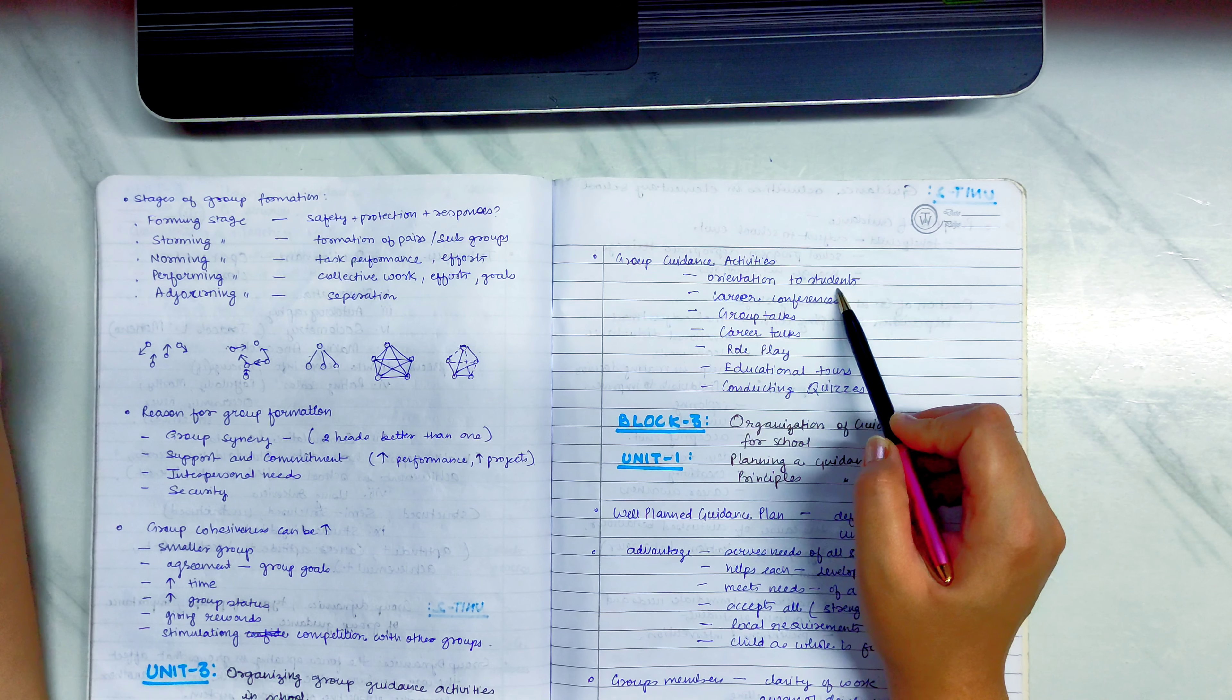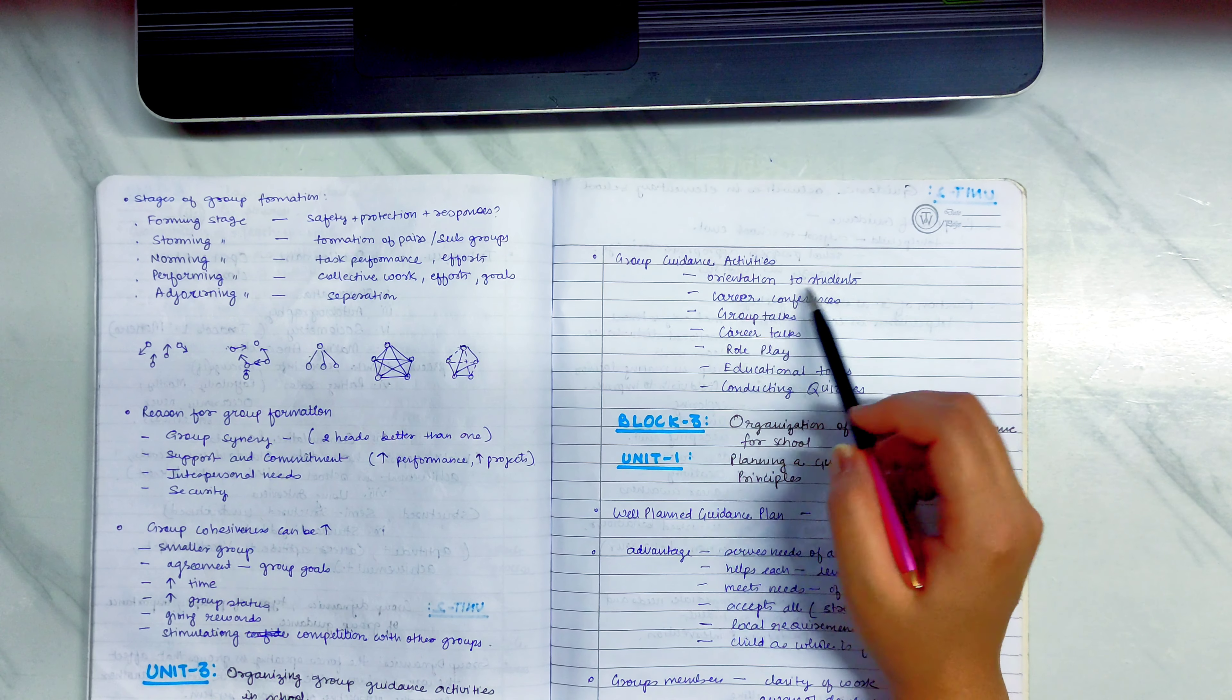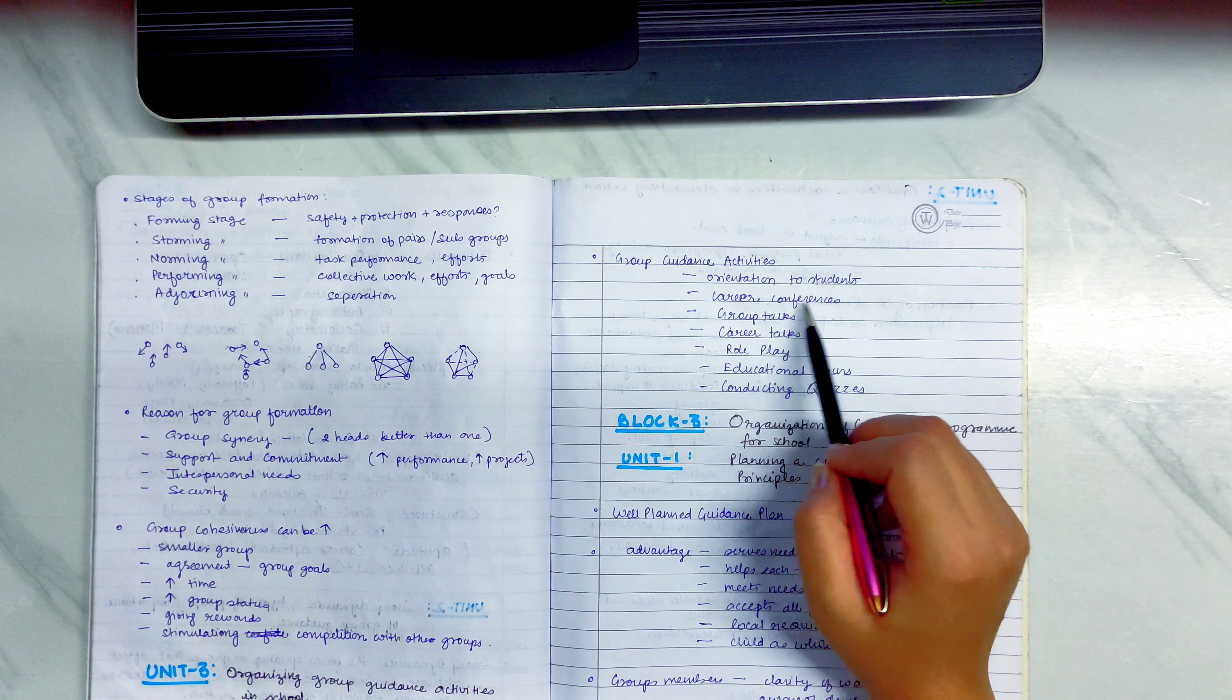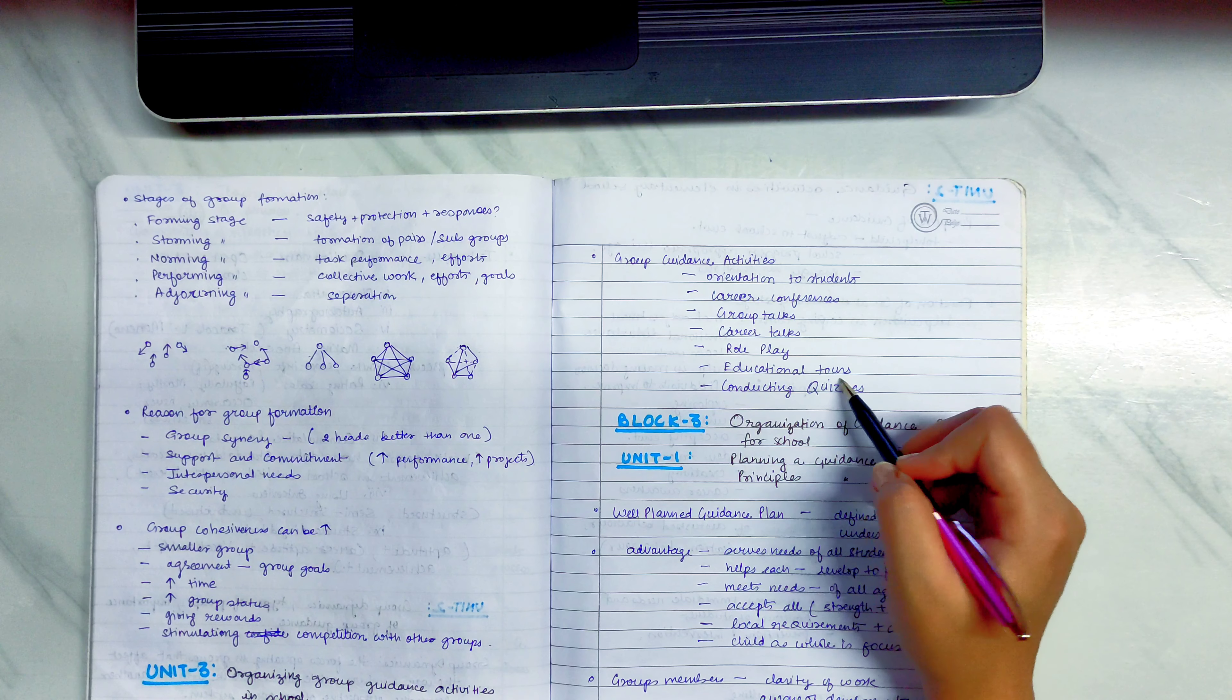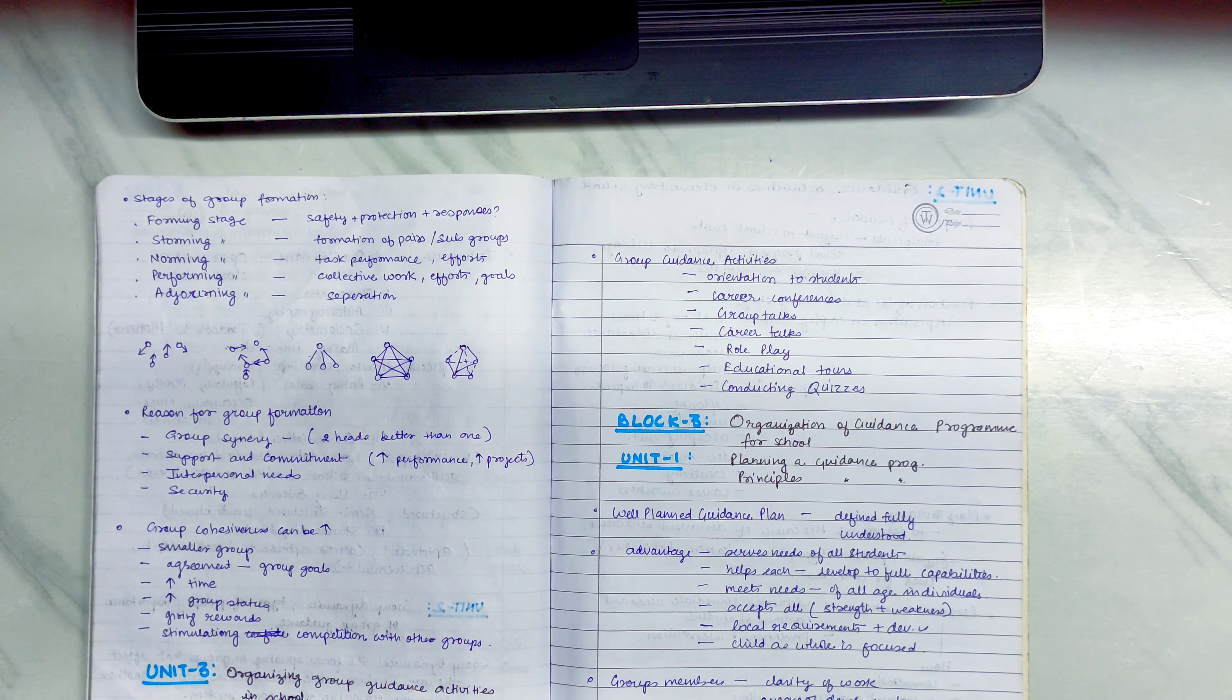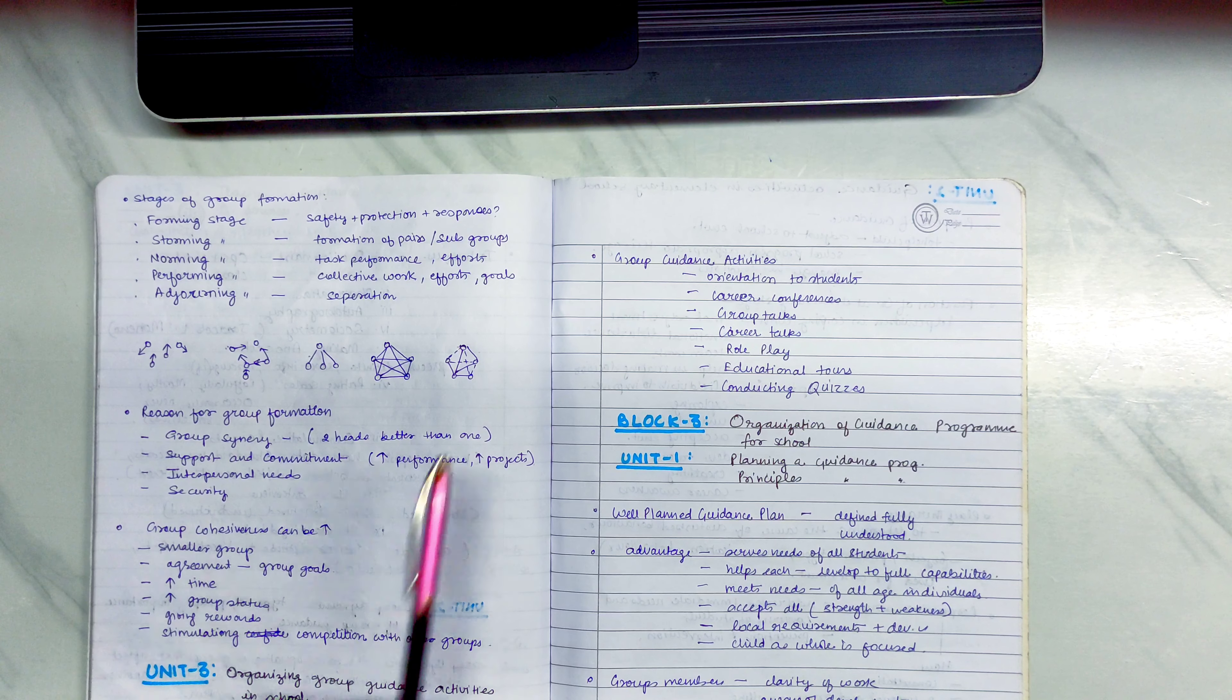Group Guidance Activities: Orientation to Students. You can take the orientation first. You can help them with group guidance. Career conferences, group talks, career talks, role plays, educational tools. These are the group guidance activities which we can do with the students. And with this, the block 2 is a sum up. We will talk about the block 3. Thank you for this episode. Thank you.